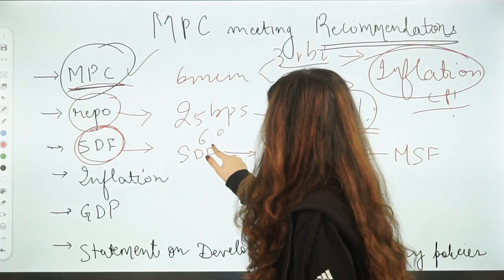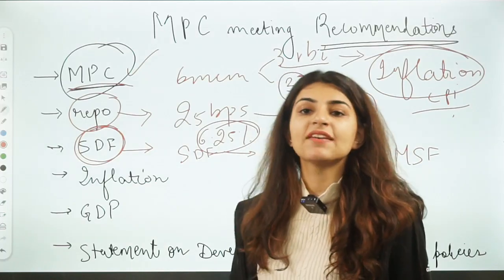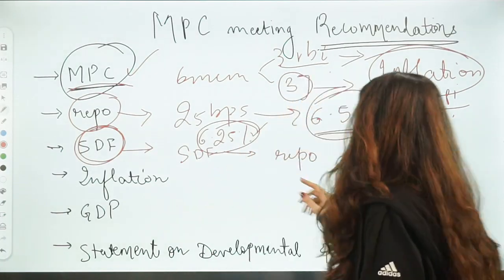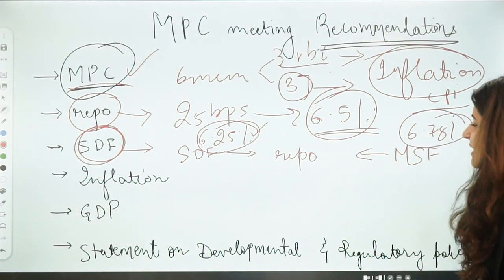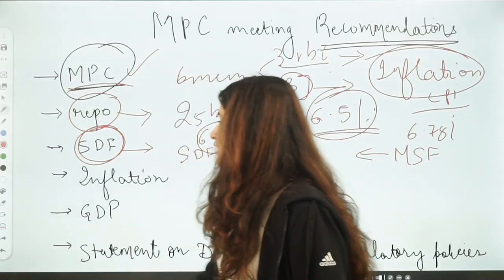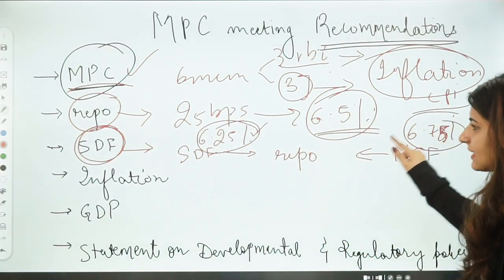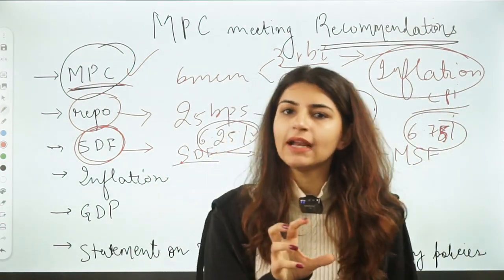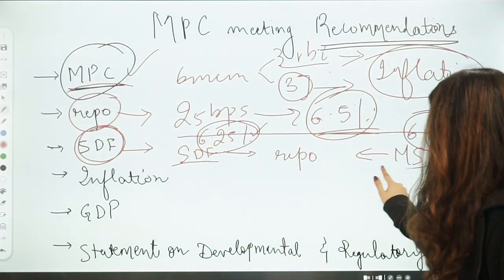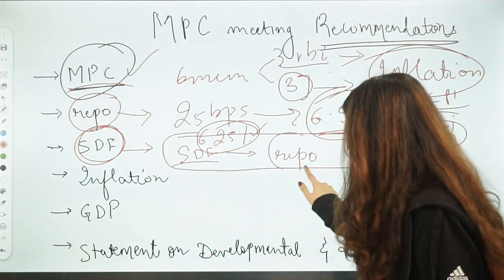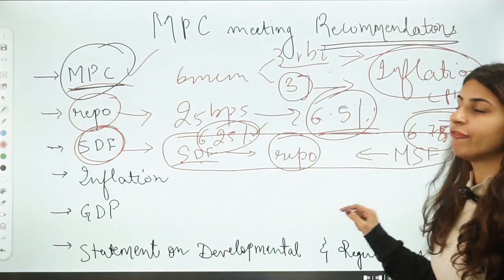Currently, after this Monetary Policy Meeting, the SDF stands at 6.25% and the MSF is 6.75%. So this is the full liquidity corridor — the liquidity adjustment framework. The repo rate is in the middle; the SDF forms the floor rate and the MSF forms the ceiling rate.